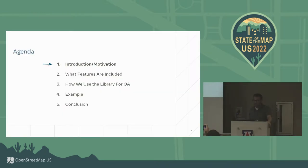Just a quick overview. I'll give an introduction and motivation. Then UNC will talk about what we mean by major map features and what features are included. And then Charmaine will talk about how this thing gets used and how we use it for QA.